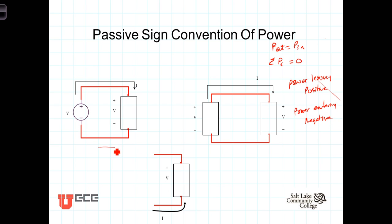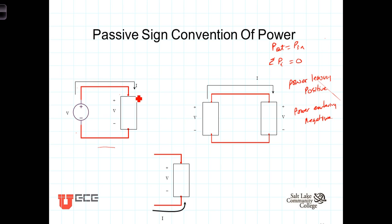In this diagram, we have a circuit consisting of a source and a load. In both of these devices, the voltage is the same. This source is providing a voltage, plus to minus, which is then applied to the load, plus to minus. The current is leaving the source and being delivered to the load. So in both of these devices, the voltage and current are the same.